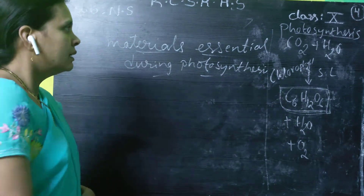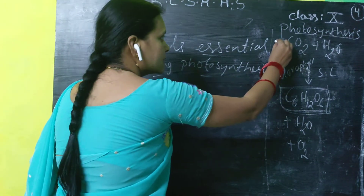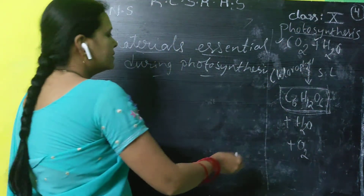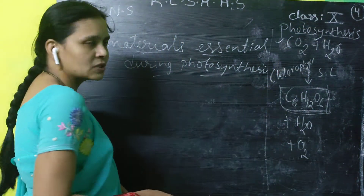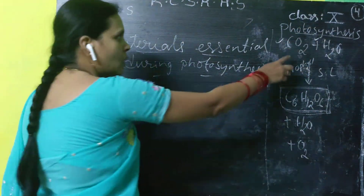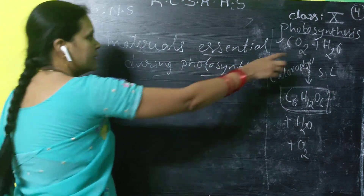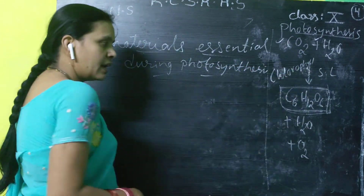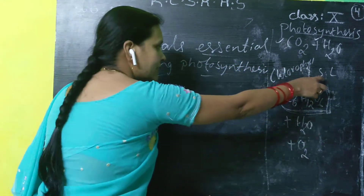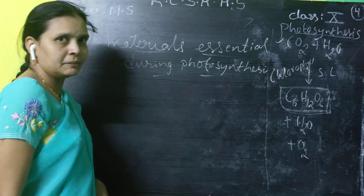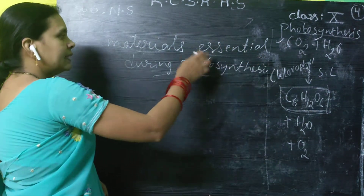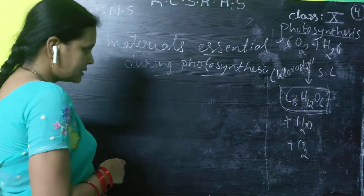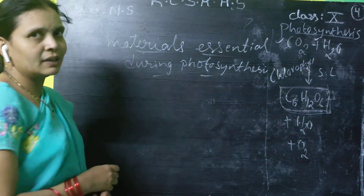In this equation, what are the essential materials required during photosynthesis? The first is carbon dioxide, the second is water, the third is chlorophyll, and the fourth is sunlight. All these are the essential factors required for photosynthesis.